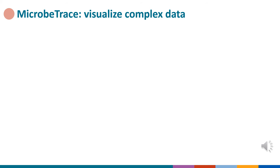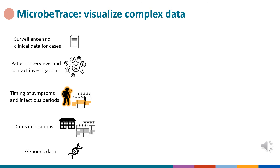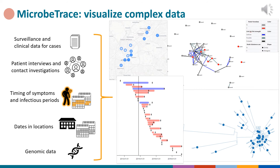Finally, MicrobeTrace, developed by CDC's Division of HIV-AIDS Prevention, is primarily a data visualization tool. MicrobeTrace can be used to visualize a wide variety of data collected as part of contact, cluster, and outbreak investigations. Examples of MicrobeTrace data visualizations include maps, contact and transmission networks, phylogenetic trees, and timelines. Many of these visualizations can be annotated with demographic, behavioral, clinical, and epidemiologic characteristics.